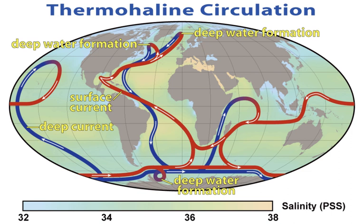The pH is expected to reach 7.7 by the year 2100. An important element for the skeletons of marine animals is calcium, but calcium carbonate becomes more soluble with pressure, so carbonate shells and skeletons dissolve below the carbonate compensation depth. Calcium carbonate becomes more soluble at lower pH, so ocean acidification is likely to affect marine organisms with calcareous shells, such as oysters, clams, sea urchins and corals, and the carbonate compensation depth will rise closer to the sea surface.